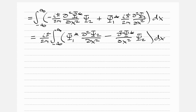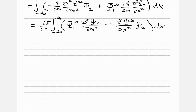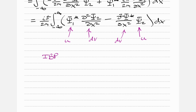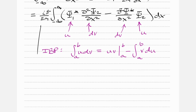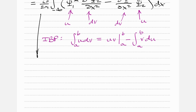This calls for integration by parts. The formula is: the integral from a to b of u dv equals u v evaluated from a to b, minus the integral from a to b of v du. Getting comfortable with integration by parts is important — you'll use it frequently in quantum mechanics. Here, for the first term, u equals psi 1 star and dv is d squared psi 2/dx squared dx; for the second term it is reversed.